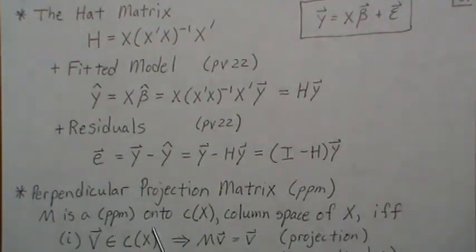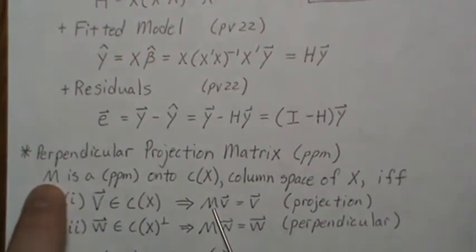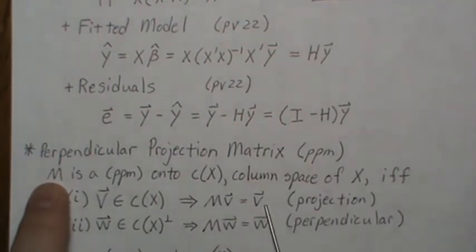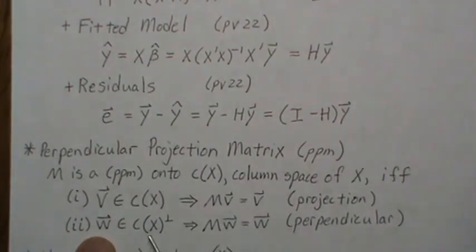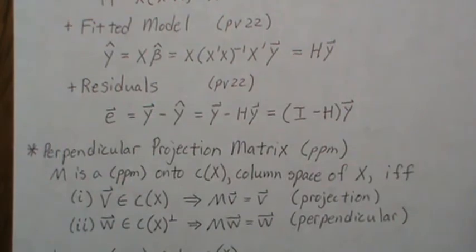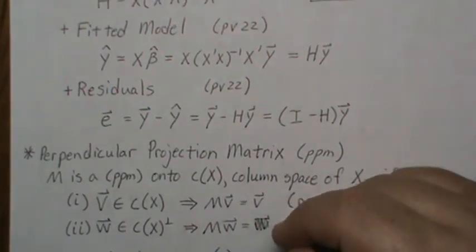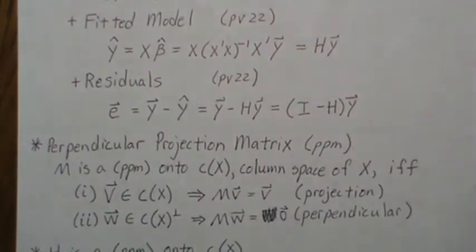A perpendicular projection matrix — we'll just call it PPM — M is a perpendicular projection matrix onto the column space of x if and only if it meets these two properties. For every vector v in the column space of x, if you pre-multiply it by the perpendicular projection matrix, so Mv, you get v back — that's the projection part. If you take a w in the orthogonal complement to the column space of x and pre-multiply it by M, so Mw, you get zero — and hence it's perpendicular.